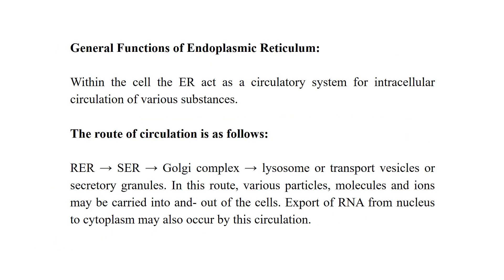The general functions of the endoplasmic reticulum include acting as a circulatory system for intracellular circulation of various substances. The route of circulation is: rough ER → smooth ER → Golgi complex → sorting, packaging, transport → lysosomes, transport vesicles, or secretory granules. Various particles, molecules, and ions may be carried into and out of cells through this route. Export of RNA from the nucleus to the cytoplasm may also occur by this circulation.